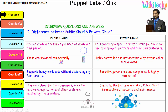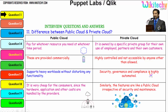Private cloud services are provided commercially. It is highly controlled and not accessible to anyone other than those allowed. It supports heavy workloads without disturbing any functionality. Security, governance, and compliance are highly automated. It is very cheap for consumers since the hardware, application, and other costs are handled by the providers.